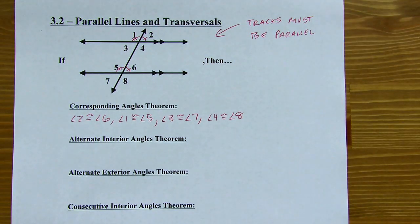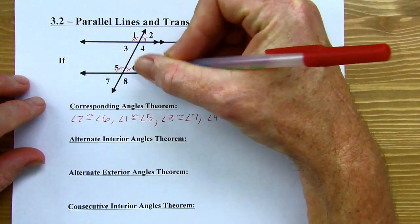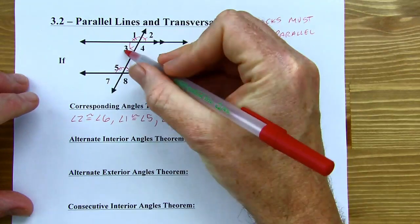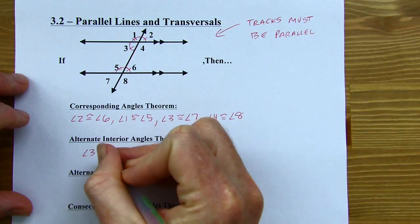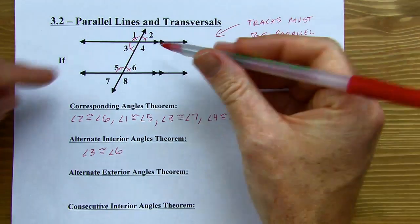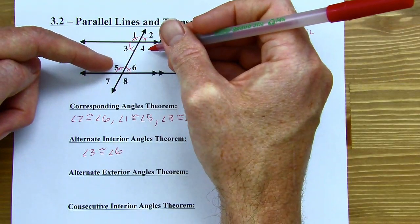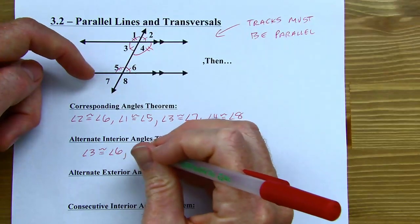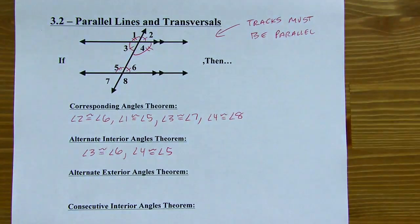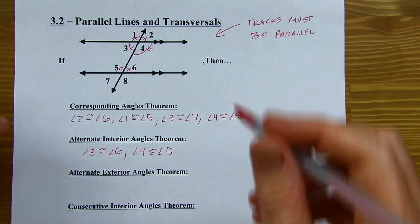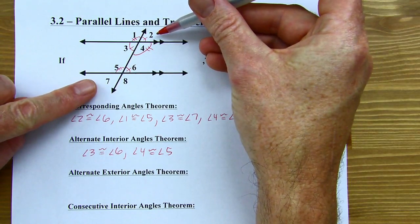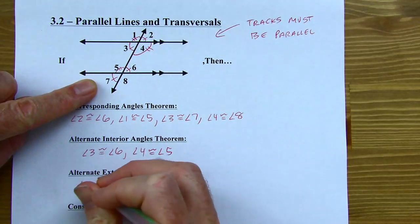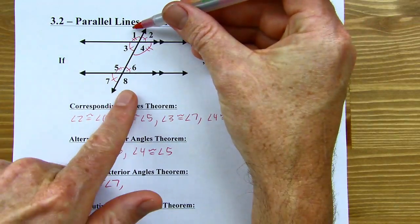Alternate interior angles — like angles 3 and 6 — are on alternate sides of the transversal and on the inside of the tracks, and they are congruent to each other. Angles 4 and 5 are another set of alternate interiors — also congruent. Following the same pattern with alternate exterior angles: angles 2 and 7, which are on different sides of the transversal and outside the tracks, are congruent. And angles 1 and 8 are also congruent.